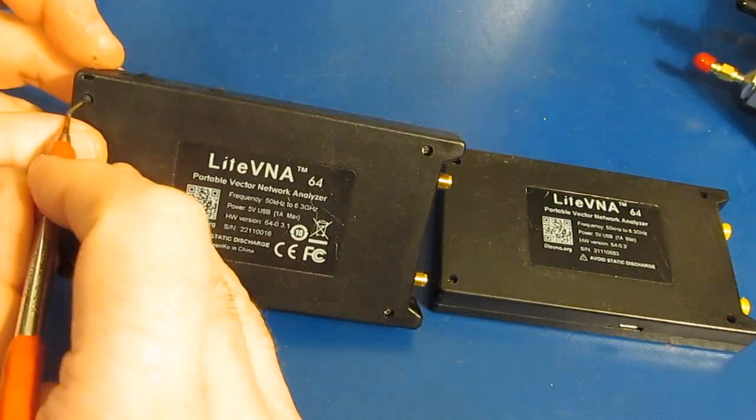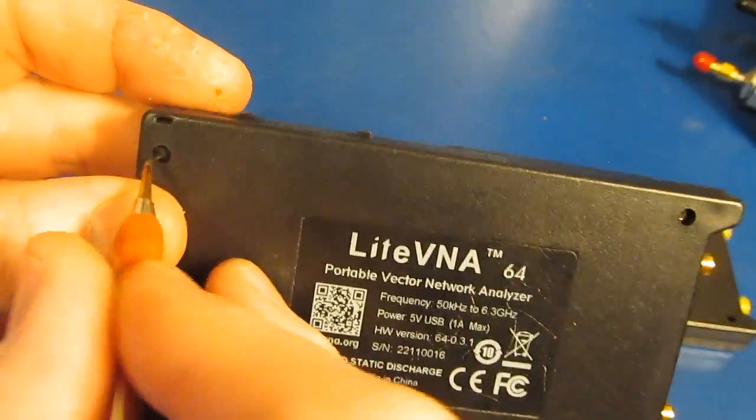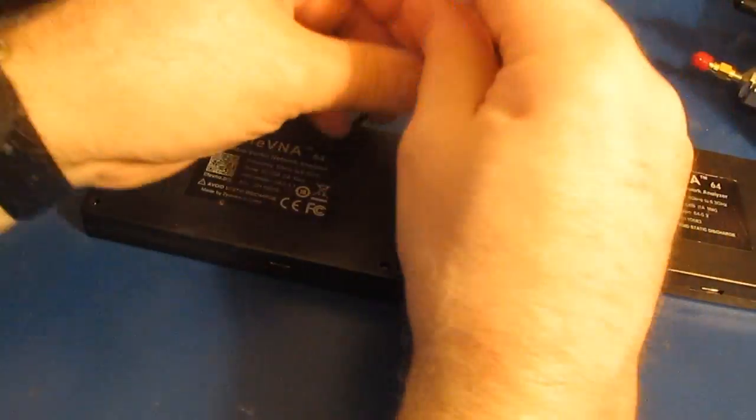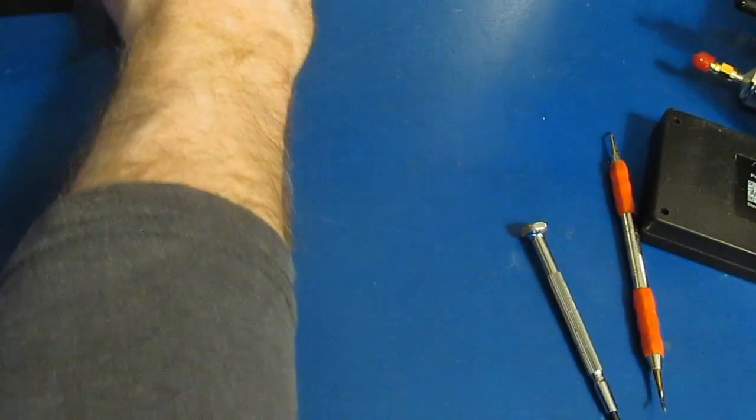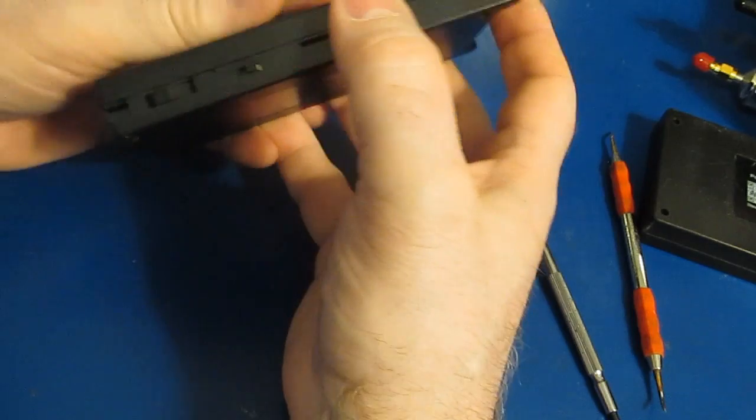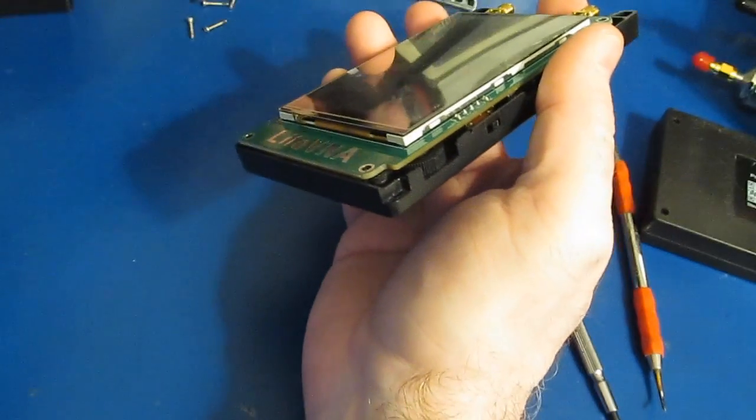Alright we'll start by pulling the soft plug out of here. Yeah you can see this is almost like a rubber. Getting to lift the cover on these there's just four screws. I really like the Light VNA 64. It's performed very well for a low cost VNA and I've been able to do a lot of experiments with this.